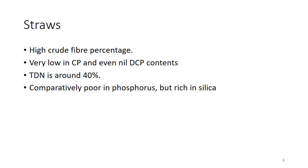Straw is the byproduct remaining after separation of grain protein, particularly from cereal crops. Straws are very high in crude fiber content and have very poor digestibility. The protein content — around four percent in wheat straw — is almost zero when considering digestible protein. Due to the presence of lignocellulosic bonds, the availability of cellulose is very limited, and TDN content is around 40 percent. It is a very poor source of nutrition, usually used in animal feeding just to fill the belly and to provide a scratch factor or to stimulate the rumination process.